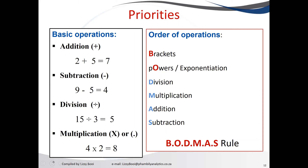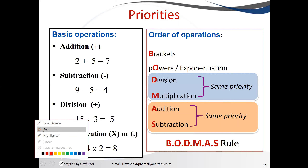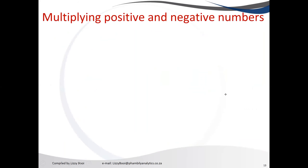However, there is a catch when working with the BODMAS rule: it also tells us that division and multiplication have the same priority. Therefore, if we have an equation that has both a division and a multiplication sign, we work from left to right.